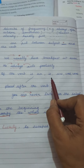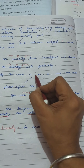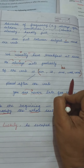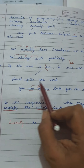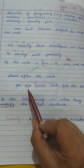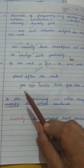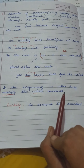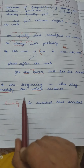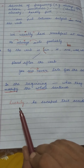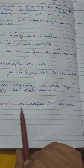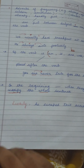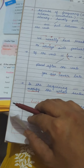If the verb is a be-form — is, am, are, was, were — the adverb is placed after that be-form verb. For example: 'You are never late for school.' The helping verb comes first, then the adverb. Saying 'you never are late' is wrong. The sixth rule: when an adverb modifies the whole sentence, it is placed at the beginning. For example: 'Luckily, he escaped the accident' — 'luckily' modifies the whole sentence, so it comes first.